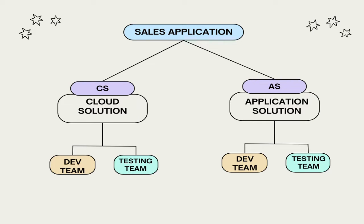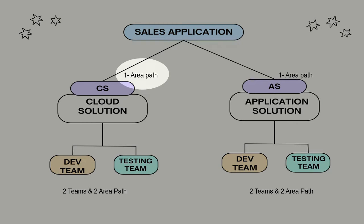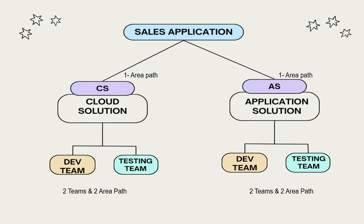For cloud solution I will be creating two teams: one for dev and another for testing. While creating the team I will also create an area path with the name of the team. Under cloud solution you will have two teams and two area paths. Similarly, application solution team will also have dev and testing teams. In order to have a proper hierarchy, we will create two more area paths — one for cloud solution and one for application solution — under which the dev and testing teams will sit. Technically there will be two major area paths for hierarchy and then four teams, each with their own area path.